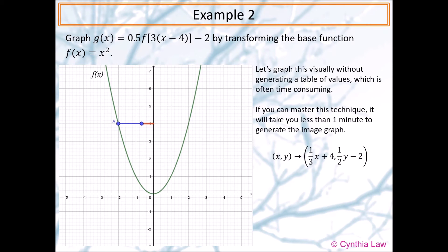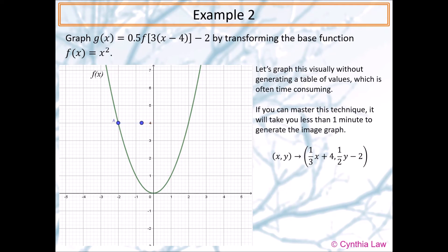Now we need to apply the horizontal translation. We need to move four units to the right. So let's get rid of the extra lines so that it's easier to read.